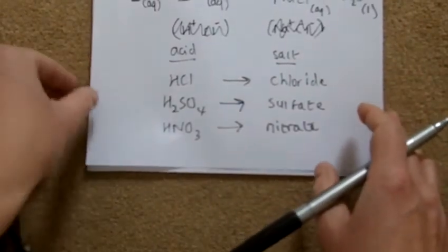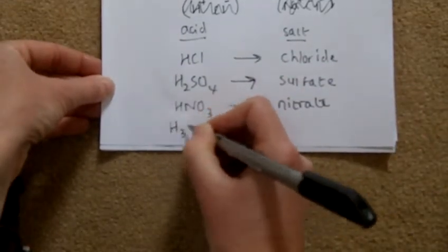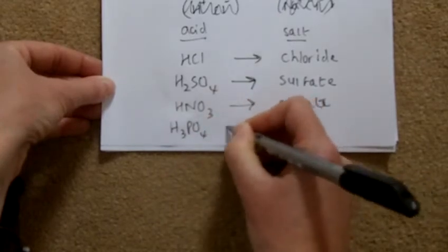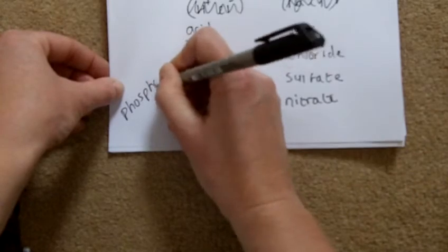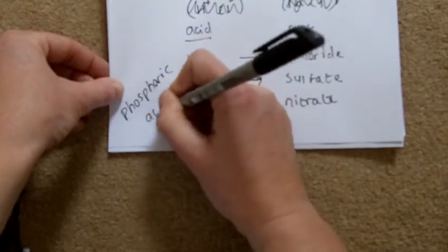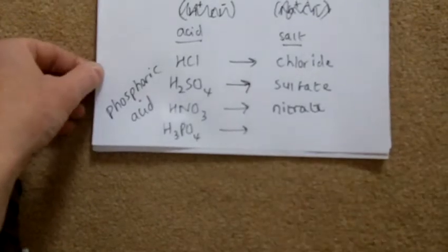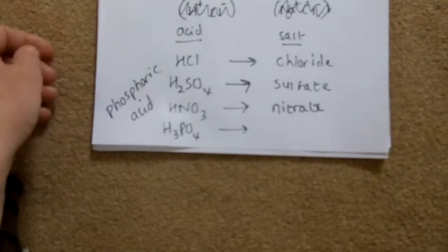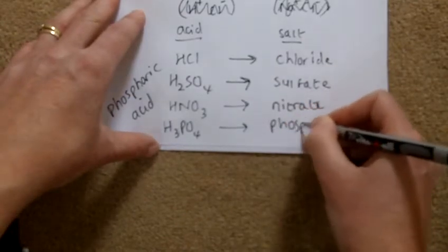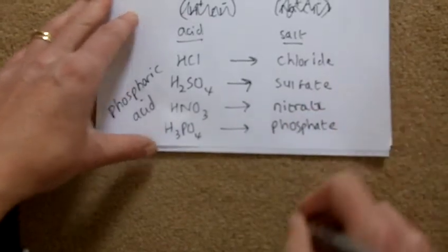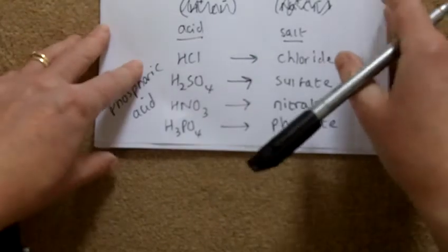There is also a slightly rarer acid — phosphoric acid. Phosphoric acid will make the salt phosphate. So those are the main salts to know.